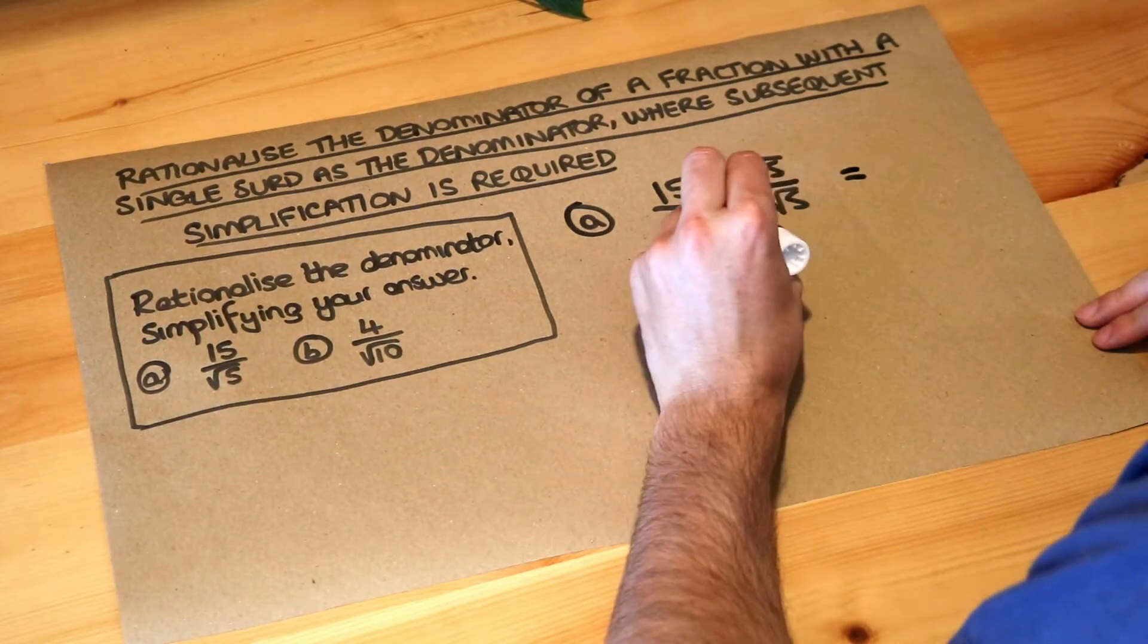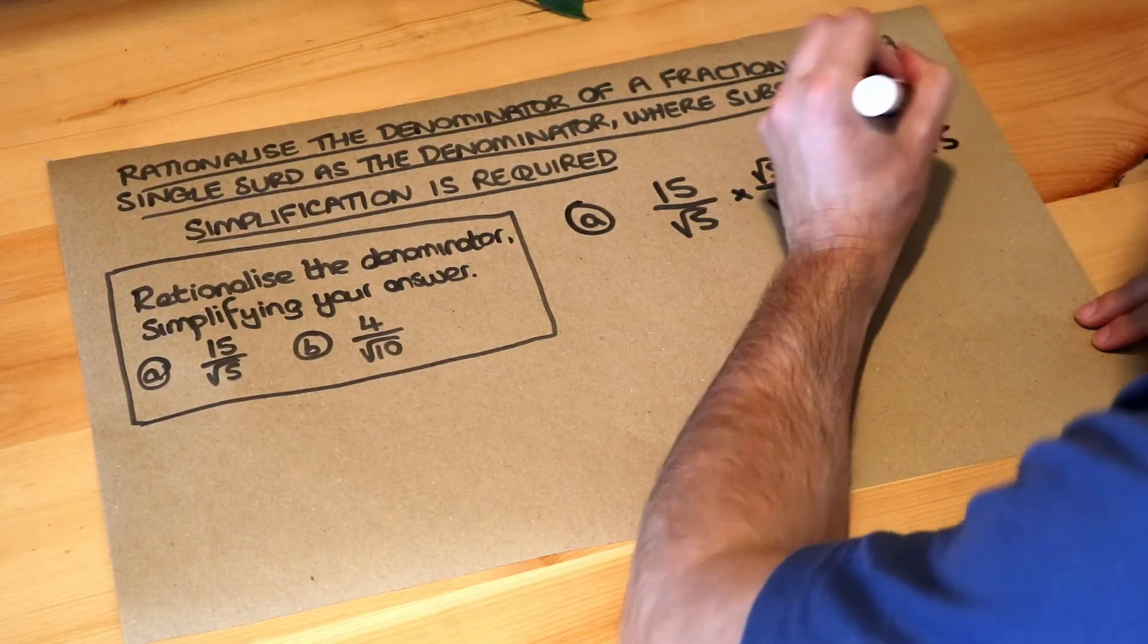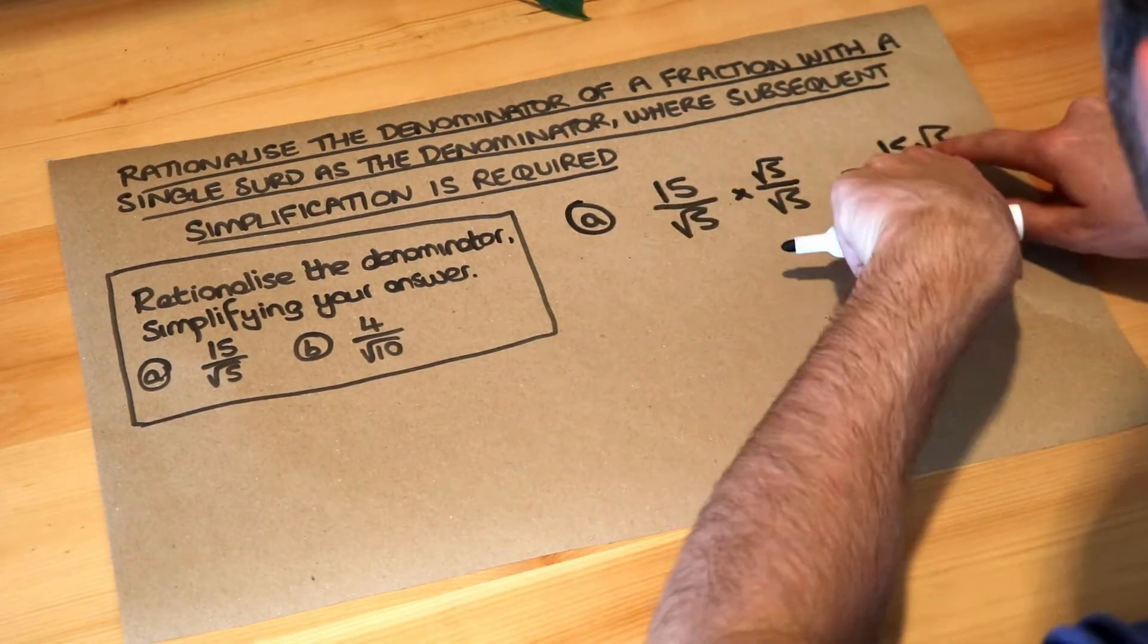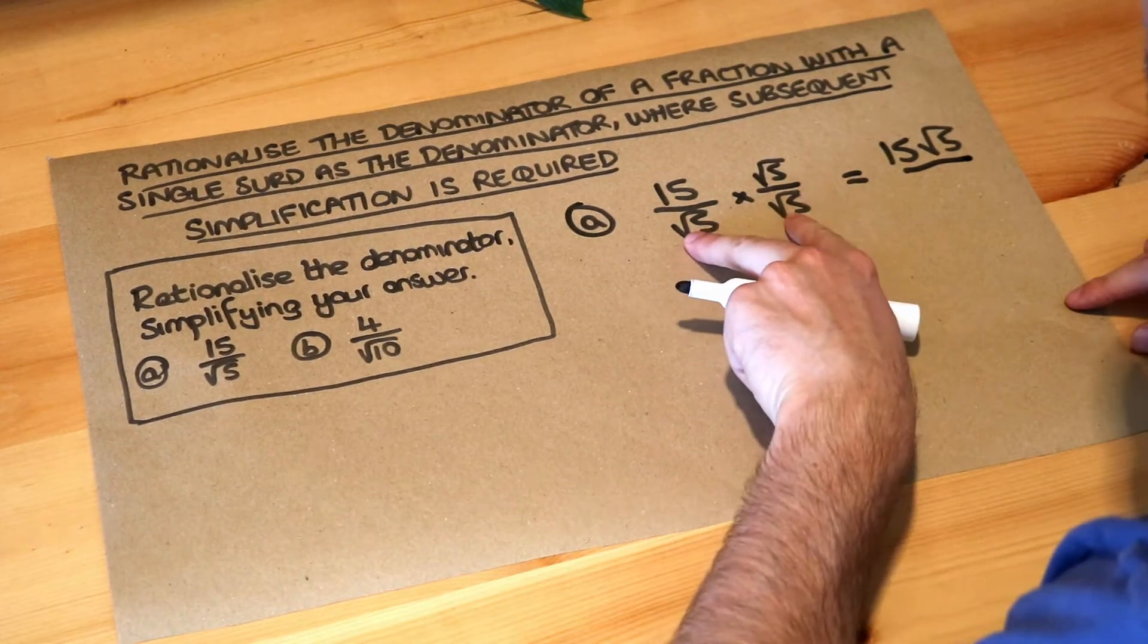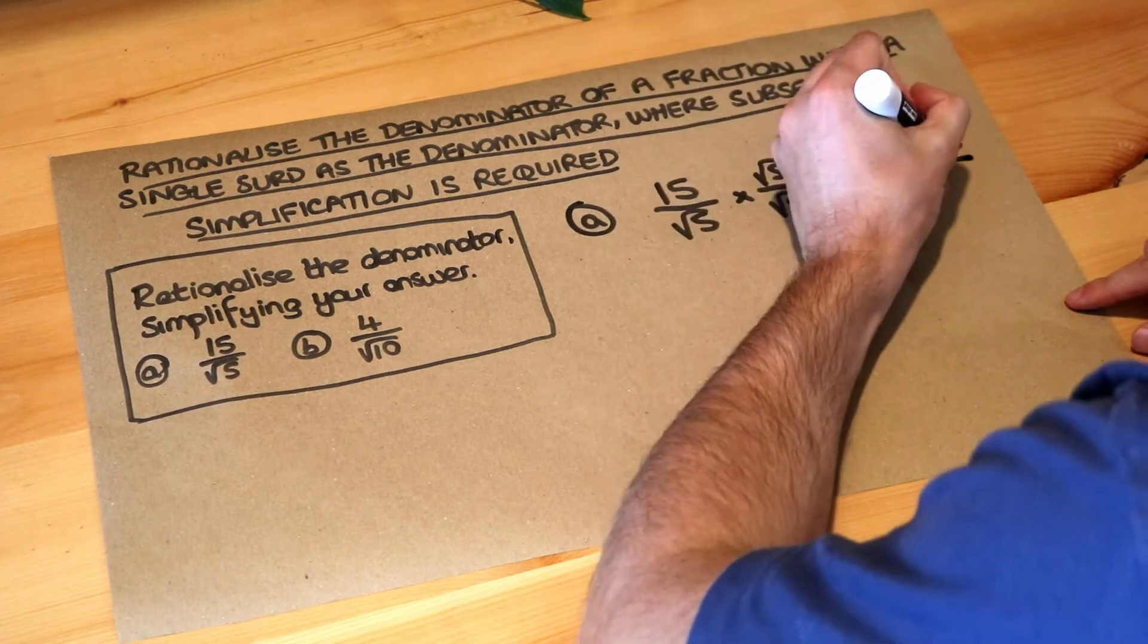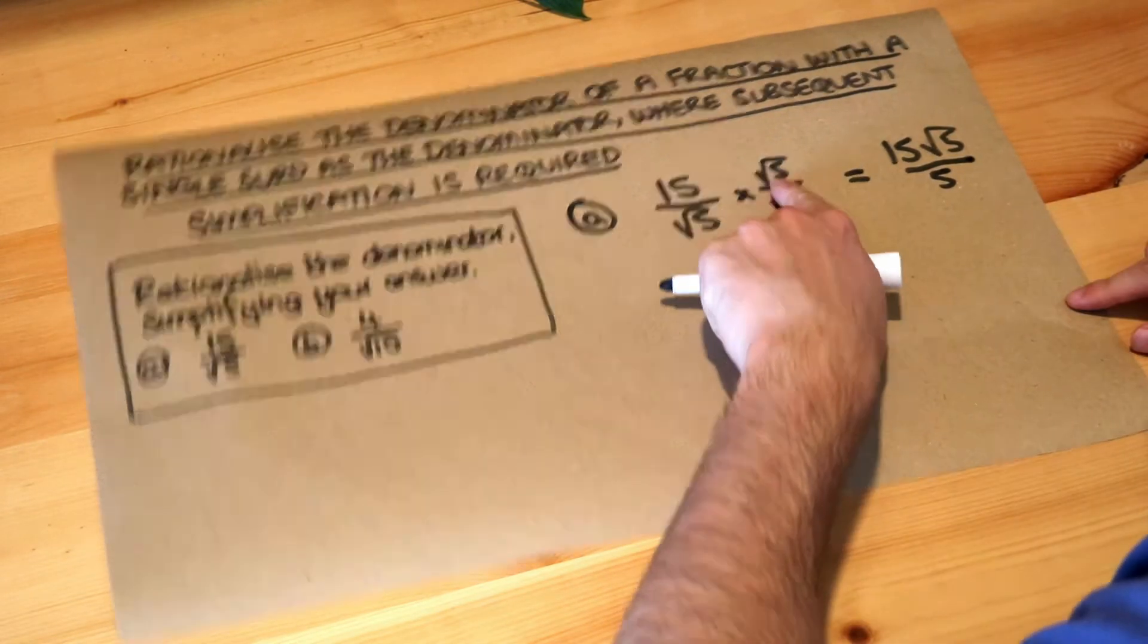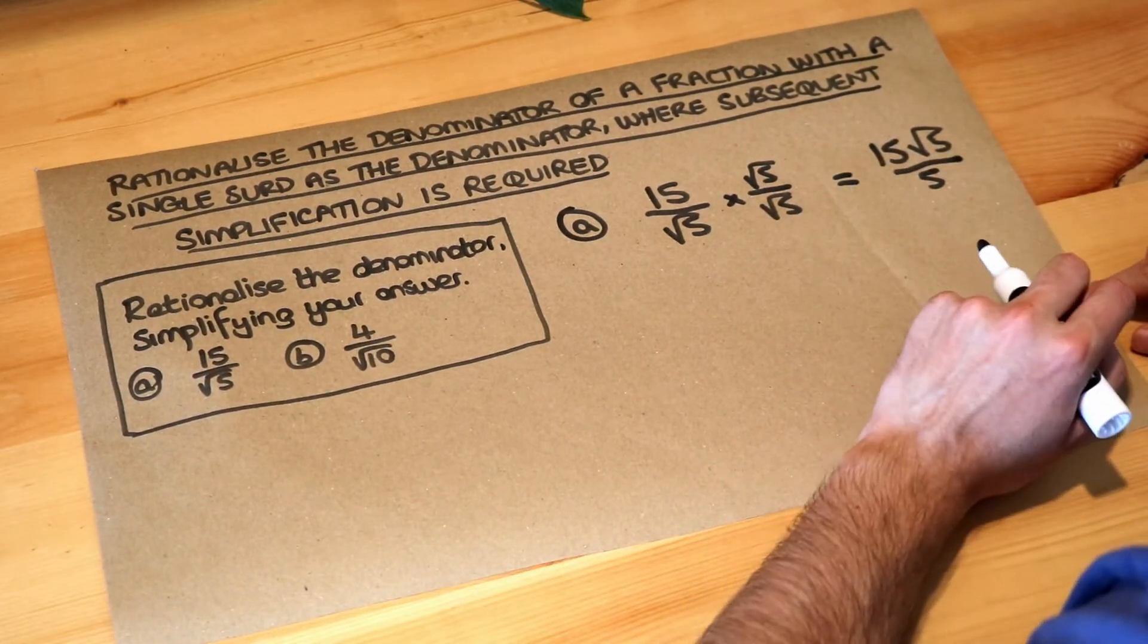But what now happens is that 15 times root 5, that's just 15 root 5, because you can't combine the non-surd and surd together other than just joining them together. It doesn't simplify any further. And root 5 times root 5 is just 5. If you times a surd by itself, the square root goes.